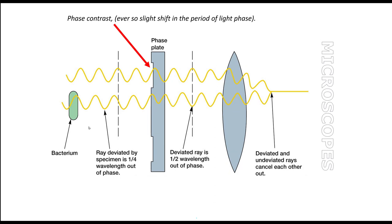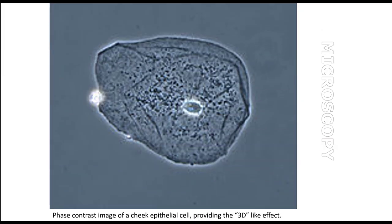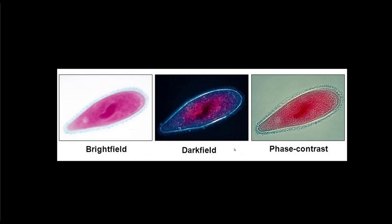Phase contrast microscopes use a slight difference in the frequency of light — similar to how 3D movie glasses use lenses of slightly different colors to create a depth effect. The phase is just off a little bit, which is enough to give a 3D type effect, making structures pop out. It is an easy scope to use and is good for looking at internal structures. If you have cilia, dark field won't show them well, but phase contrast will, making those organelles pop.